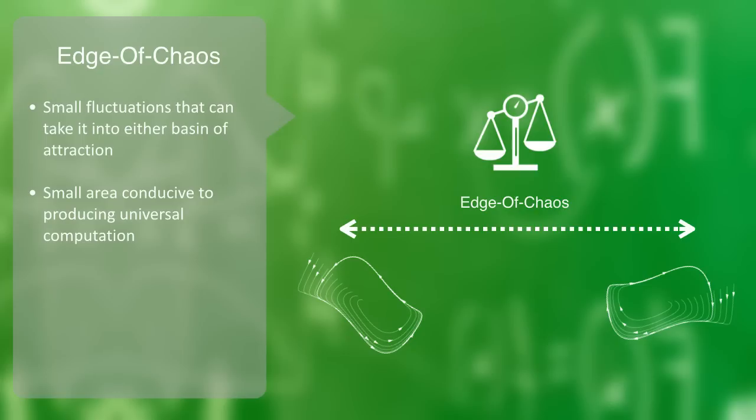In the sciences in general, the phrase has come to refer to a metaphor that some physical, biological, and social systems operate in a region between order and either complete randomness or chaos, where the complexity is maximal.